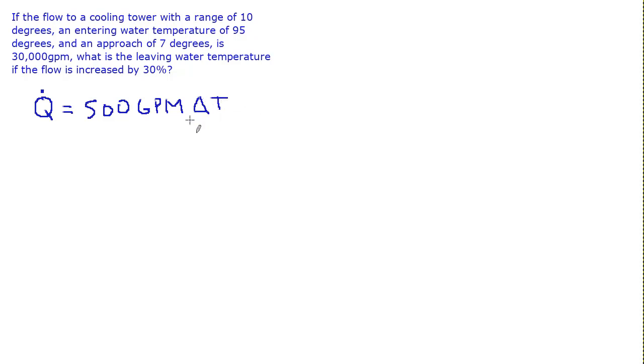If we set those equal, we could say GPM1 times delta T1 equals GPM2 times delta T2. And then we could solve from there where we know the ratio of the GPMs. GPM2 over GPM1 equals 1.3 because it increased by 30%, and that equals delta T1 over delta T2.